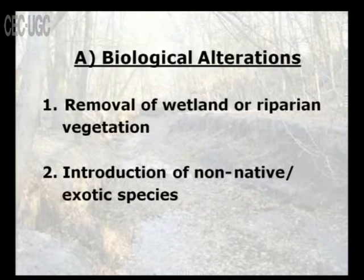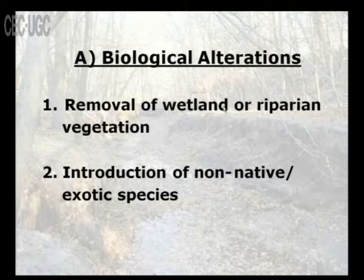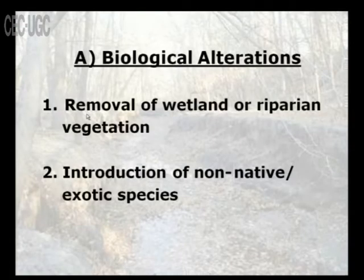Biological alteration includes the removal of wetland or riparian vegetation, and the introduction of non-native exotic species. In a particular habitat, animals exist in a food chain interdependency. If a new species is added, there may be a mismatch between the habitat and the new species, and as a result that ecosystem is lost. Biologically, we can alter wetlands either by removing vegetation or by introducing non-native exotic species.